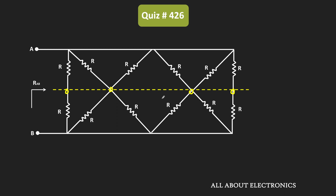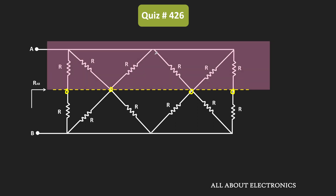This equipotential line means the potential at all the nodes on the line are the same. If you see all the resistors just above this line, one arm of all the resistors is connected at this node, and since all the nodes are at the same potential, their second terminals are also connected at the same node. So we can say that six resistors are connected in parallel. When N identical resistors are connected in parallel, the equivalent resistance is equal to R divided by N, so here the equivalent resistance is R divided by 6.